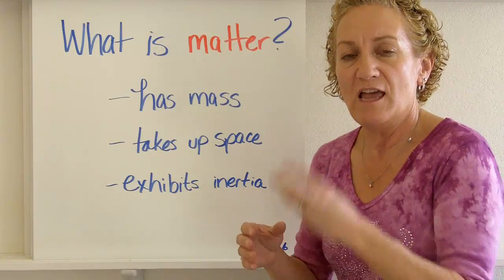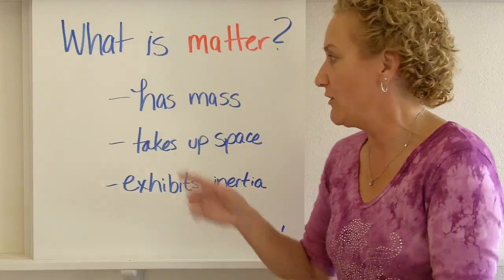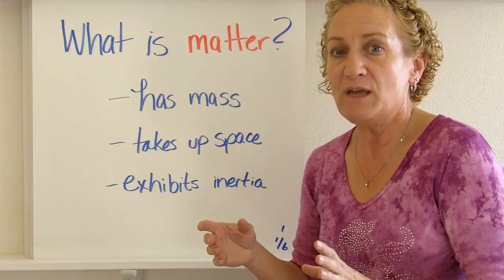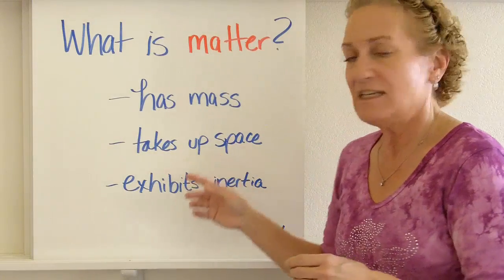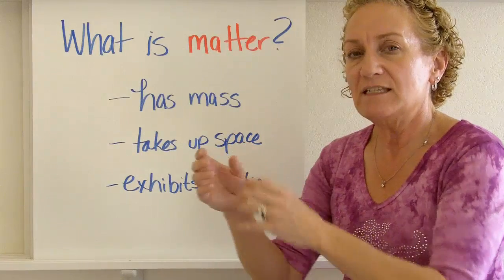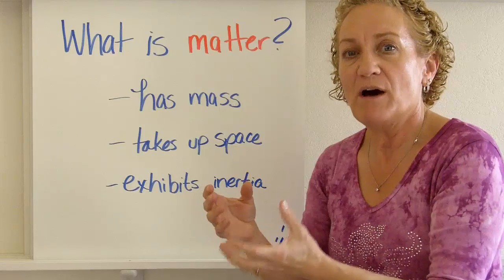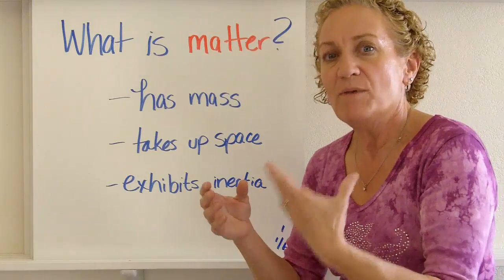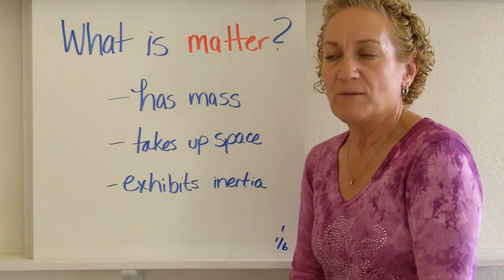There are three things required for something to be considered matter. The first is it has to have mass — it doesn't have to be a very big mass, but it has to have mass. The second is it needs to take up space — it has to take up some amount of volume, even if very small.